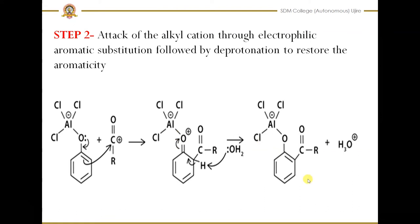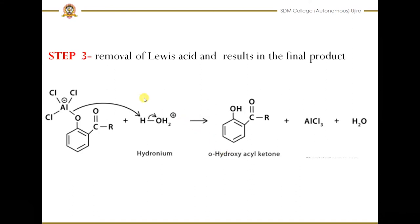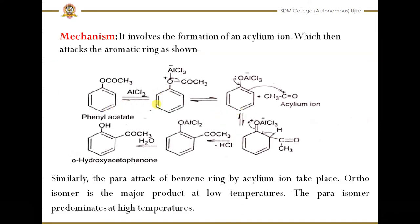In Step 3, there is removal of the Lewis acid — the anhydrous aluminum chloride is removed. The oxygen accepts a proton and simultaneously the aluminum chloride is removed, giving us the ortho-hydroxy acyl ketone (hydroxyacetophenone). The mechanism can be written in one continuous flow without labeling each step separately.